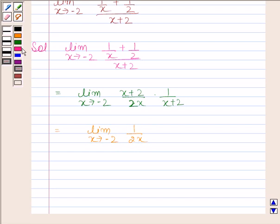We know that limit of g(x) by h(x) as x tends to a is g of a by h of a.